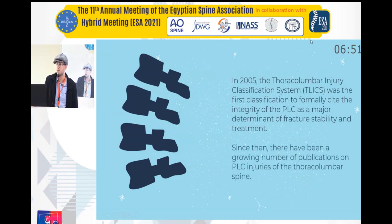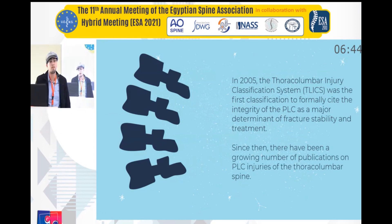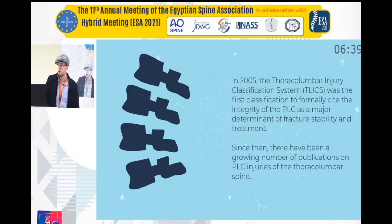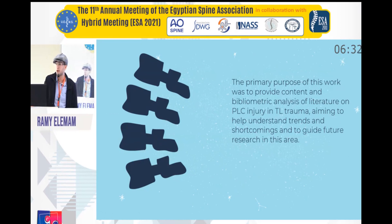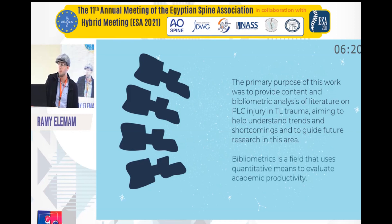In 2005, the thoracolumbar injury classification system (TLICS) was the first classification to formally cite the integrity of the PLC as a major determinant of fracture stability and treatment. Since then, there have been a growing number of publications on PLC injury of the thoracolumbar spine. The primary purpose of this work was to provide a content and bibliometric analysis of the literature on PLC injury and thoracolumbar trauma, aiming to help understand trends and shortcomings and to guide future research.